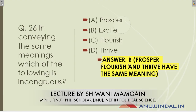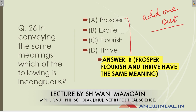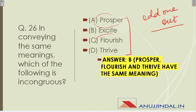Question twenty-six asks which of the following is incongruous in conveying the same meaning — it is an odd-one-out question. Among the options, prosper, flourish, and thrive have exactly the same meaning. The one that is different is 'excite'. So the correct answer is excite.